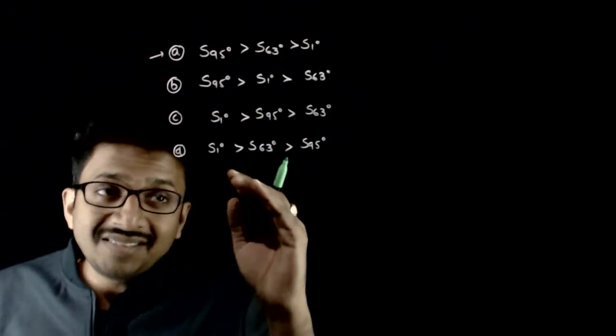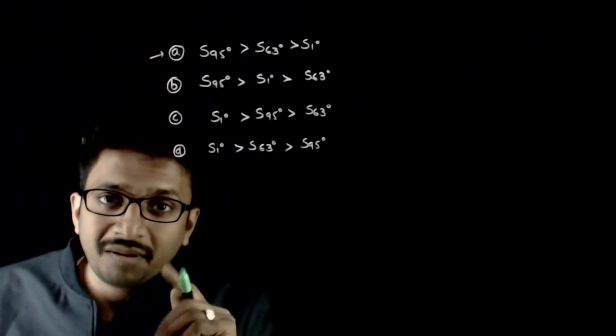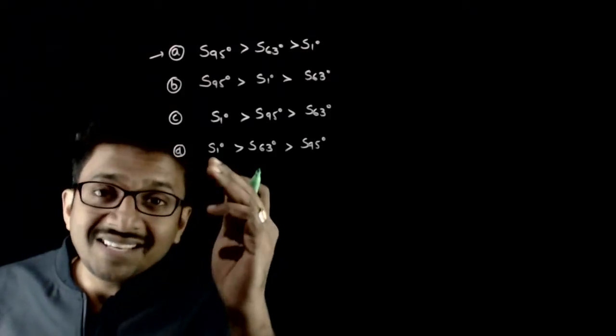So sin 1 degree, sin 63 degrees, sin 95 degrees. Obviously, sin 1 and sin 63 are straightforward because in the first quadrant, sin is an increasing function.